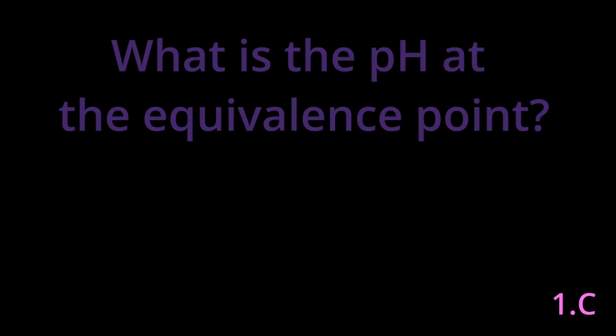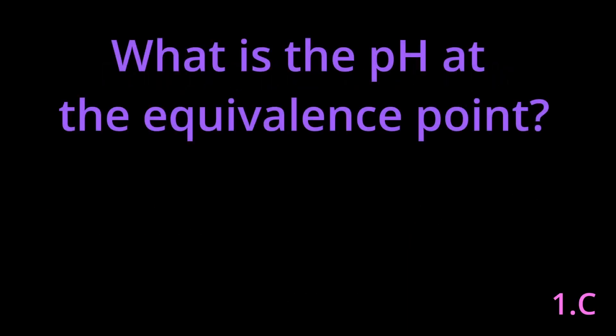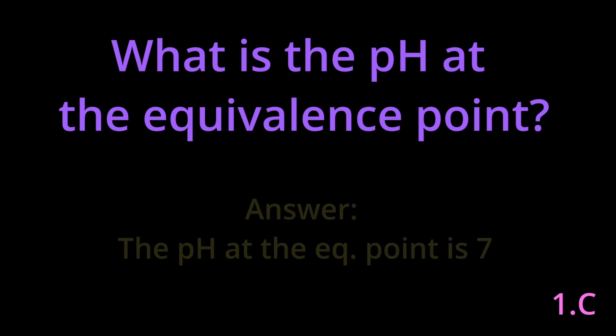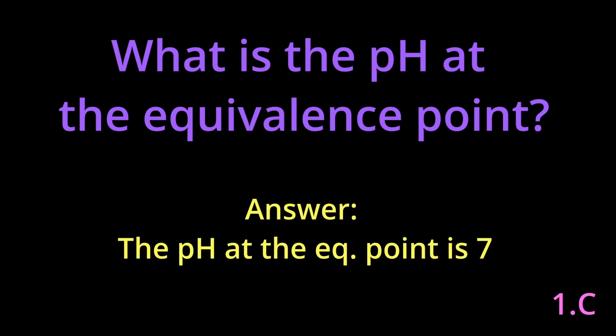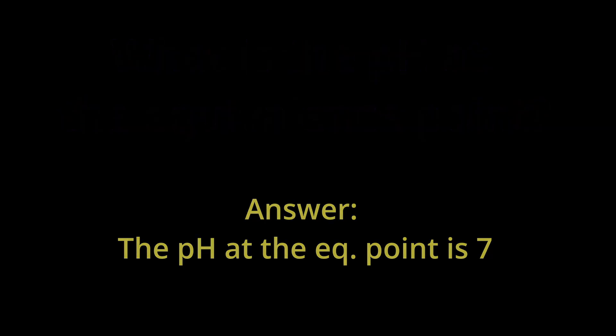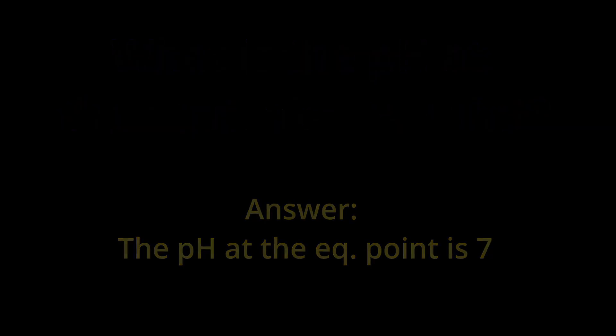Part C asks for the pH at the equivalence point. Because we're titrating strong acid with strong base, the hydronium and hydroxide combine to become H₂O, which has a pH of 7. So for all questions regarding strong acid/strong base titrations, the equivalence point will be 7.